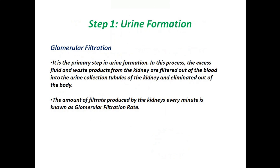Step 1 is urine formation. The first step in urine formation is glomerular filtration. It is the primary step in urine formation. In this process, the excess fluid and waste products from the kidney are filtered out of the blood into the urine collection tubules of the kidney, and eliminated out of the body. The amount of filtrate produced by the kidneys every minute is known as the glomerular filtration rate.